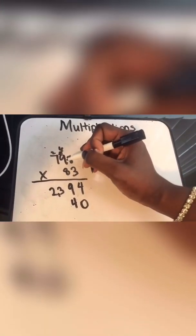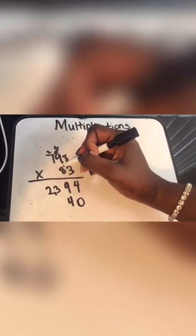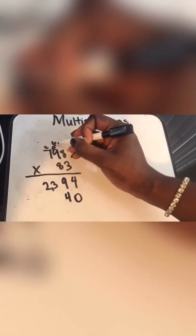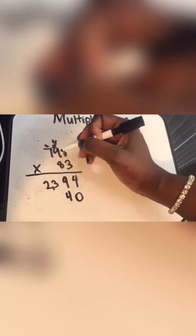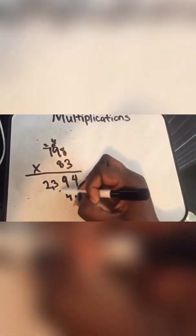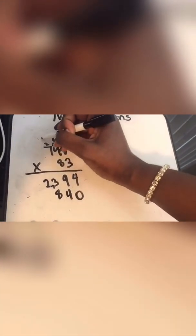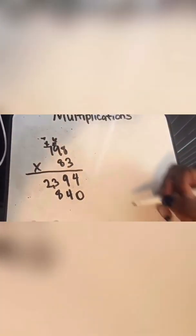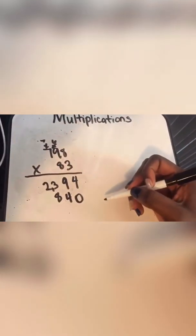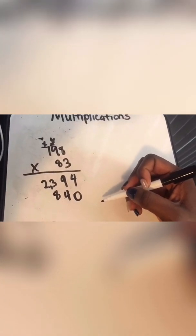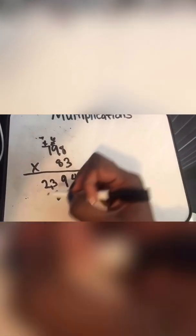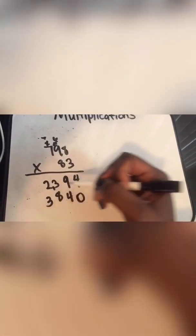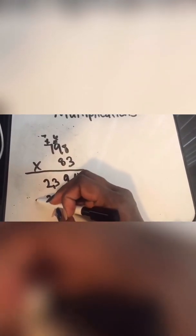So we're going to say eight times nine is 72. 72 plus six is 78. We're going to cross this two here and then put the seven up here. Eight times seven is 56. 56 plus seven is 63. We're going to put that six there.